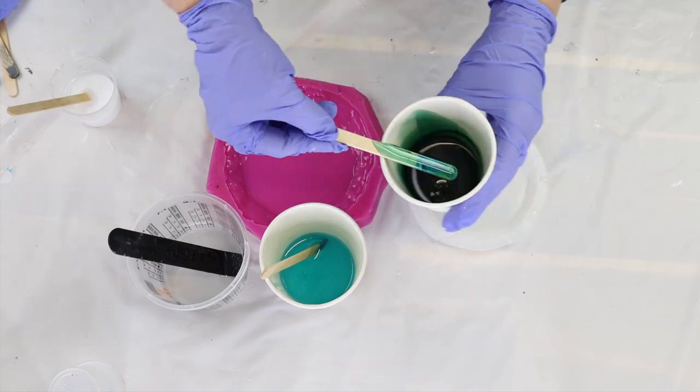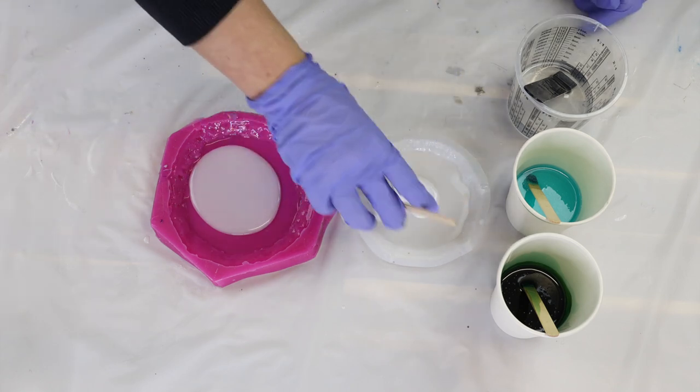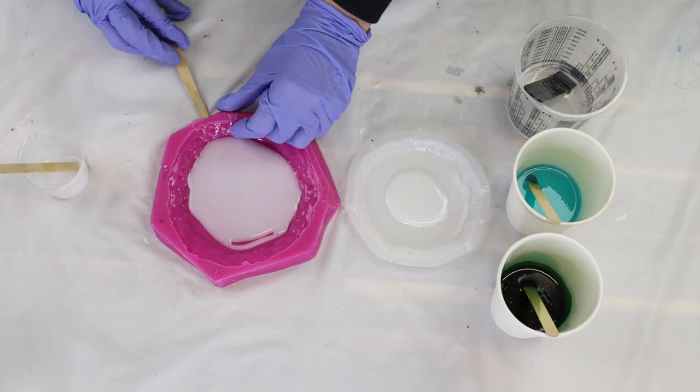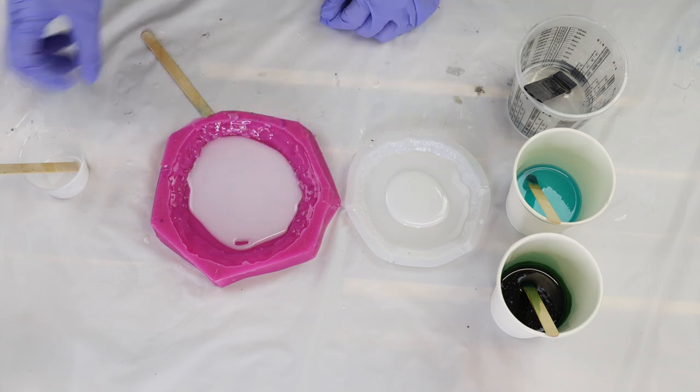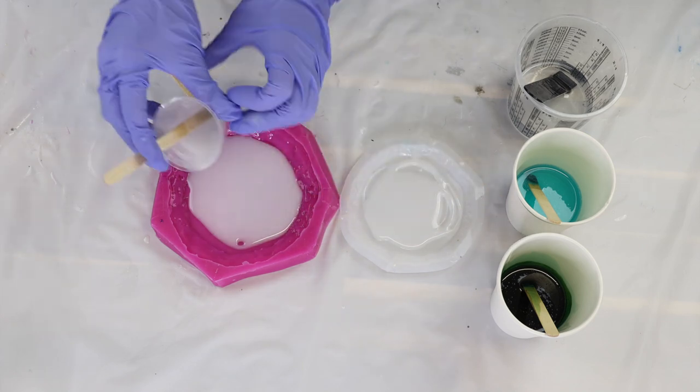And then once that is all really mixed through resin, you're going to want to place your white down first and you just need enough of your white resin to coat the bottom surface area of your mold. You definitely don't want to overdo it with the white resin.